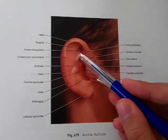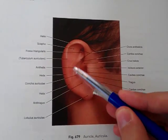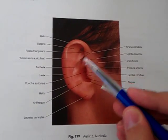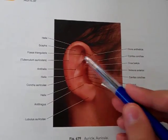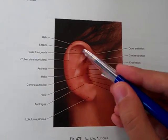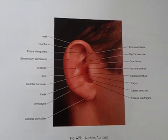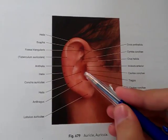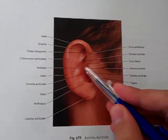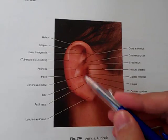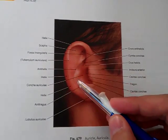Then you have an antihelix, which divides into the crura antihelicis, which border the triangular fossa. The concha is encircled by the antihelix.